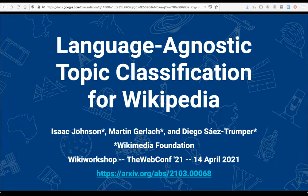Can you see my slide? Yeah. Great. Then I will get started. Hi, I'm Isaac Johnson. I'm a research scientist at the Wikimedia Foundation. I'll be presenting my paper, Language Agnostic Topic Classification for Wikipedia, which is work that I did alongside Martin Gerlach and Diego Saez Trumper, who are also researchers in the Wikimedia Foundation research team.